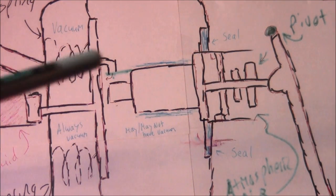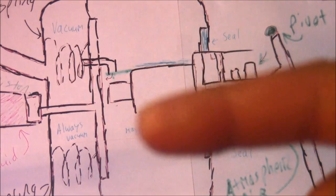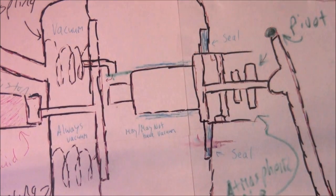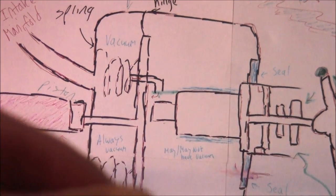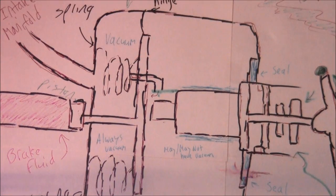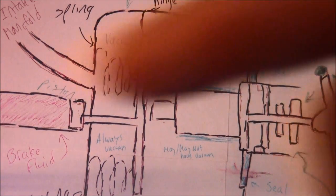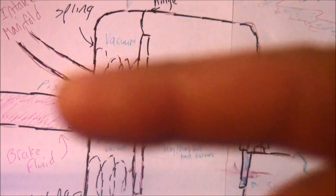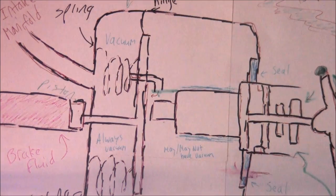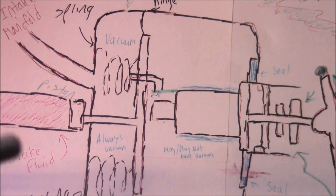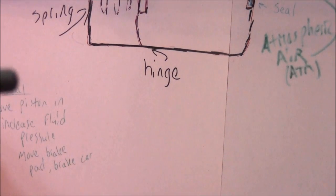This will make this plate right here move this way. It'll want to go that way, which in turn will make it easier for you to push on the brake pedal, thus pushing the piston this way. That'll push the fluid, increase the pressure, and achieve the main goal, which is increase fluid pressure, move the brake pad, and brake the car.